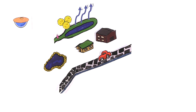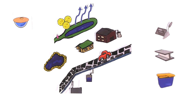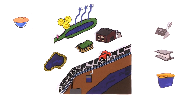Collected rainfall can also be stored externally in tanks, which can be located outside or underground. The main materials for the construction of these tanks are concrete, steel, and plastic. Usage of tanks helps to reduce the overall need for underground water. However, they have a higher initial cost than swales or ponds.